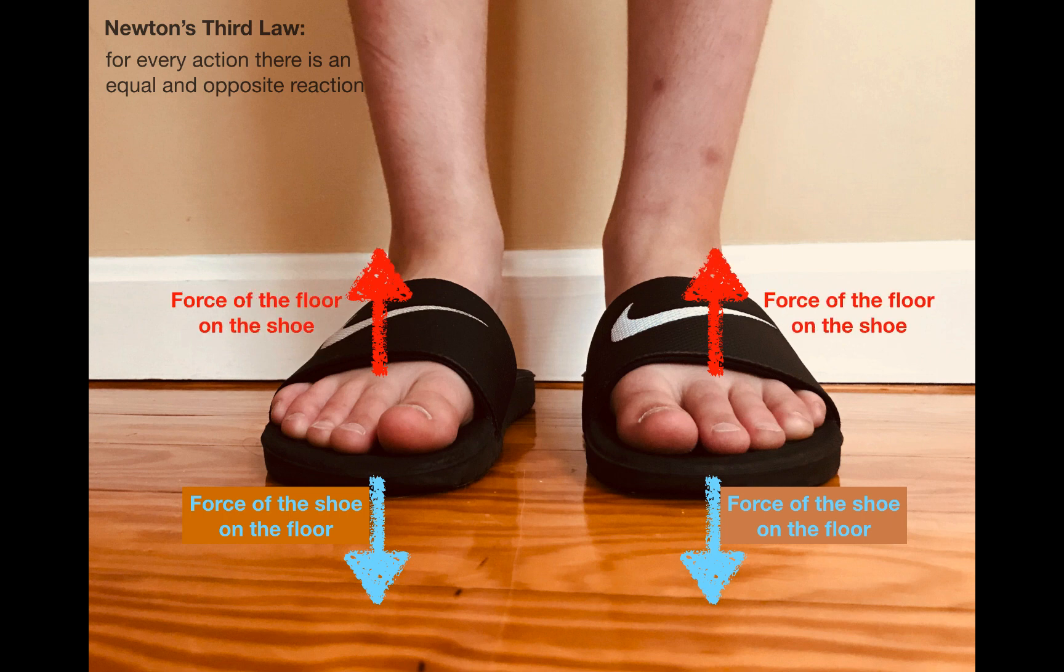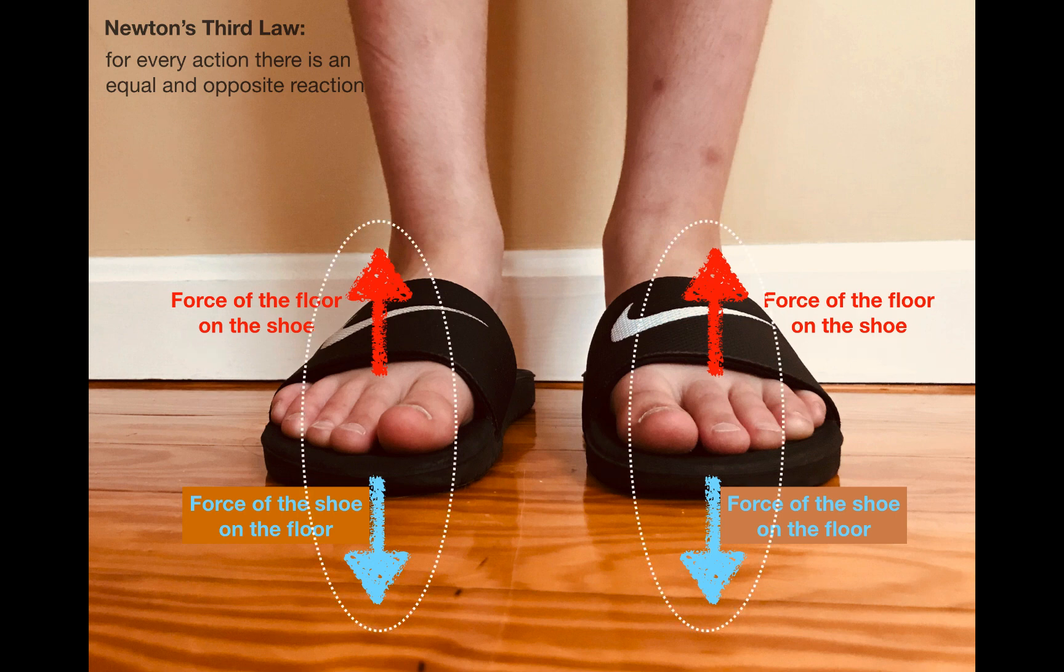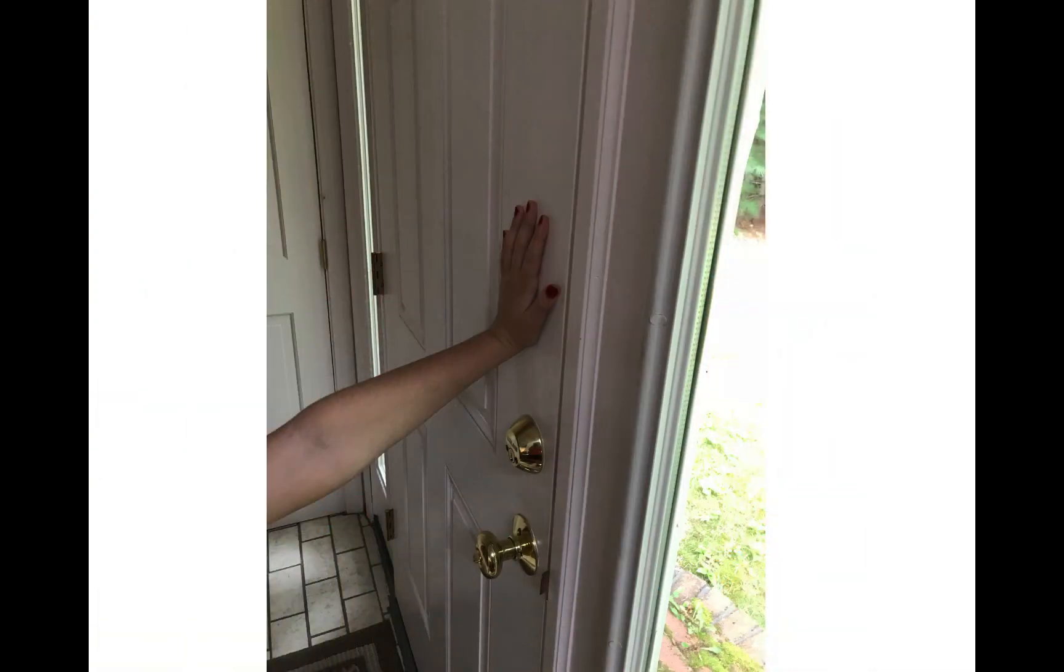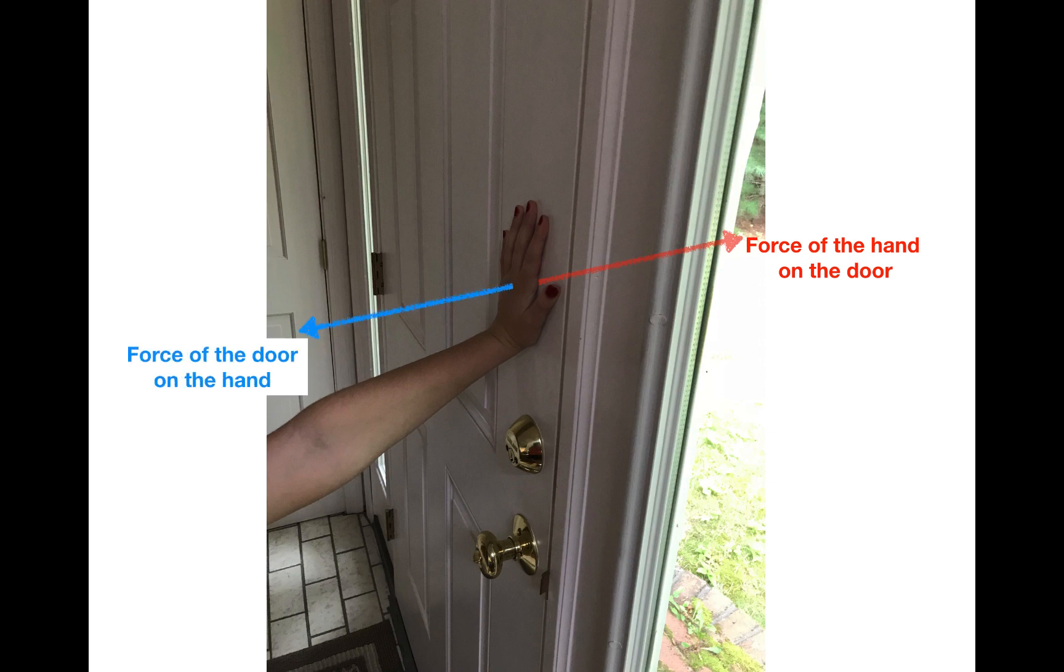So the action forces are the forces of the shoes on the floor, and the reaction forces are the forces that the floor exerts back up on the shoes. Each pair of forces is what we refer to as an action-reaction pair. Similarly, here's a shot of a hand pushing on a closed door. The action force in this case is the hand pushing on the door, and the reaction force is the door pushing back on the hand.